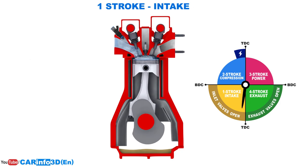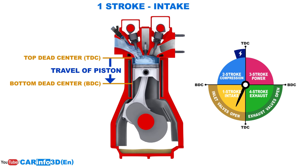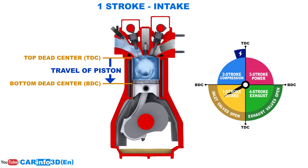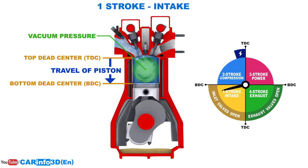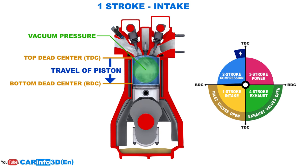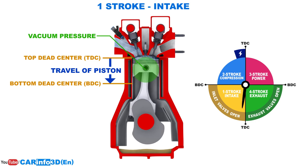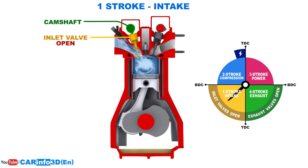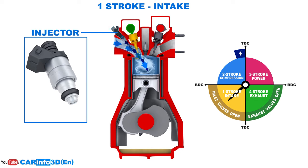Stroke 1 — Intake. The piston travels down from top dead center to bottom dead center. The cylinder volume expands, creating vacuum pressure. At the same time, the camshaft causes the inlet valves to open, allowing the fuel-air mixture to enter the cylinder. In modern vehicles, gasoline is supplied via an injector, whereas in the past, carburetors performed this function.